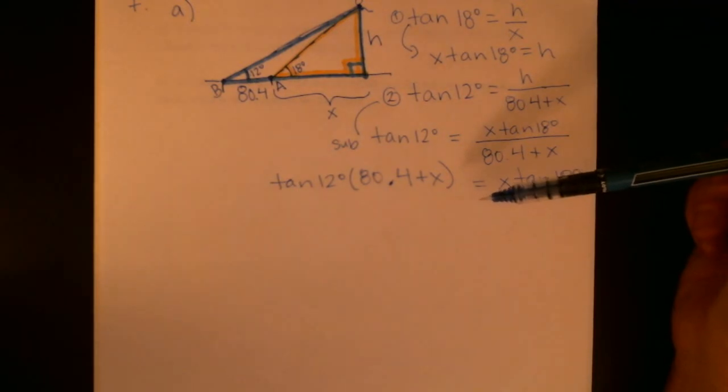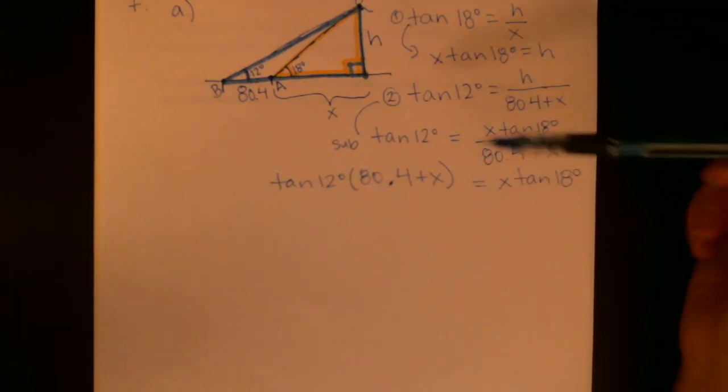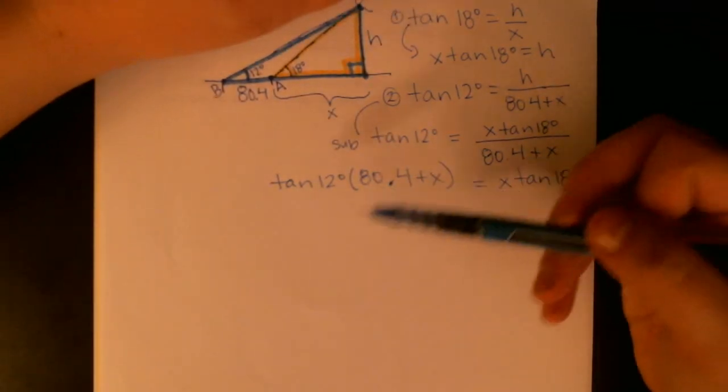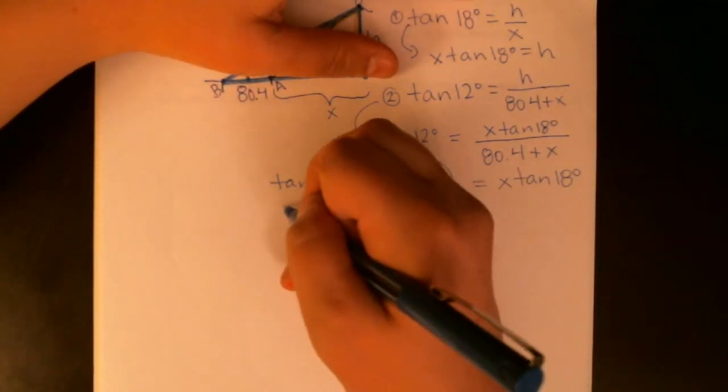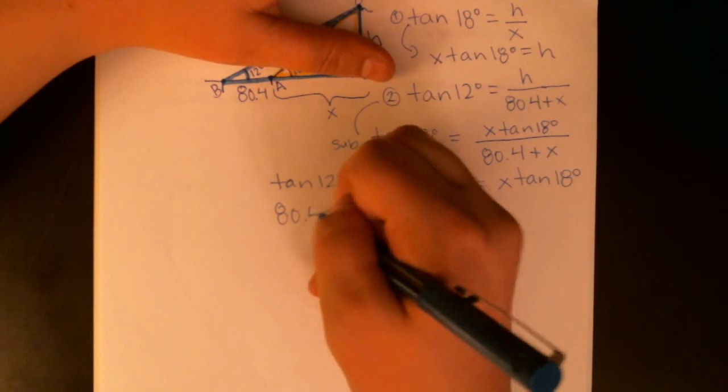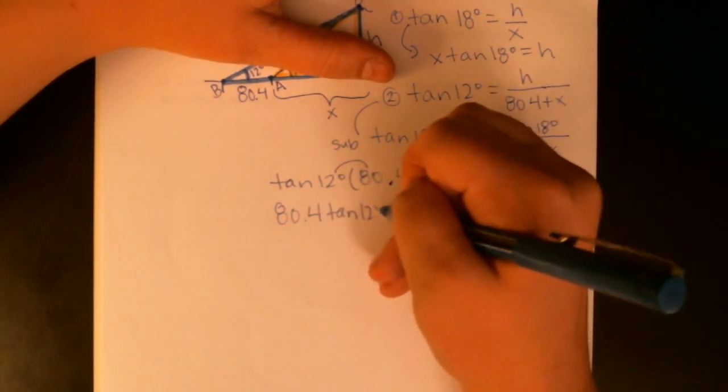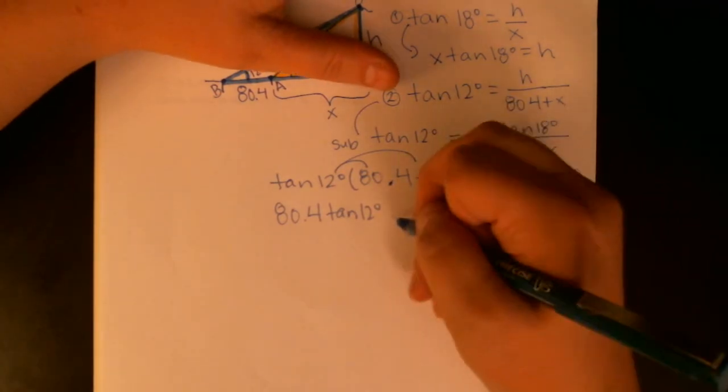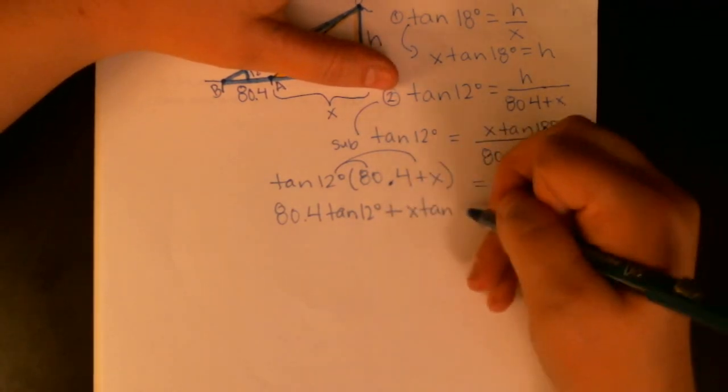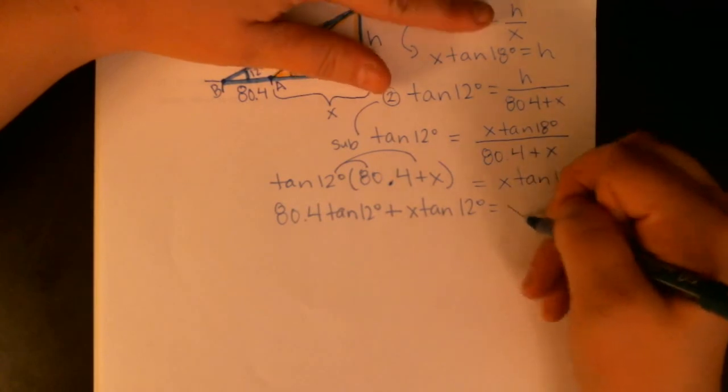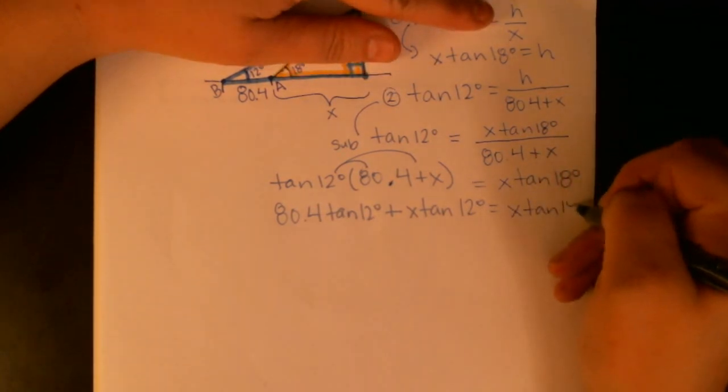So we're going to multiply the 80.4 by the tangent of 12 degrees, and we're going to multiply the x by the tangent of 12 degrees, and that equals x tangent 18 degrees.